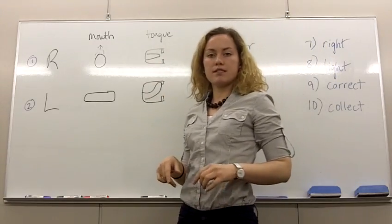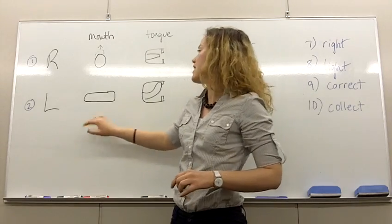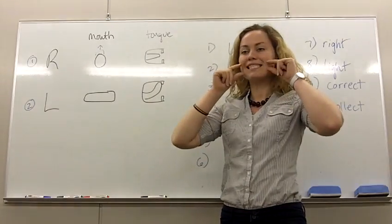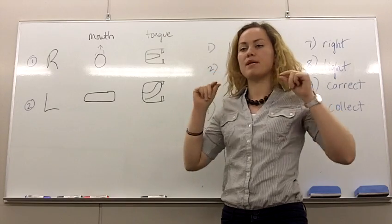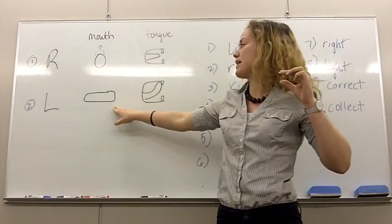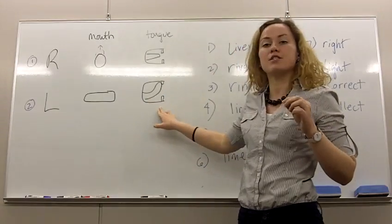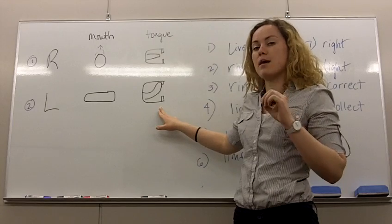Let's look at the difference with the letter L and the sound L. Your mouth is like this, more open, but your lips are not pointed out. Your mouth is just open like this. Your tongue is really important. It should be just behind your top teeth.